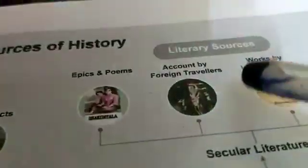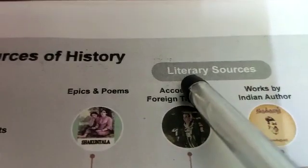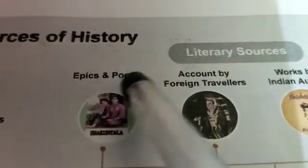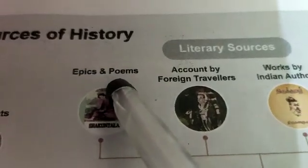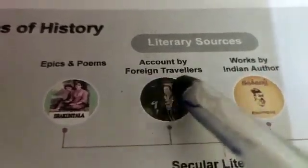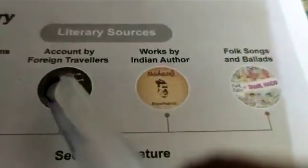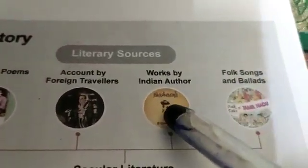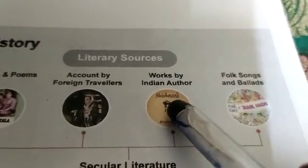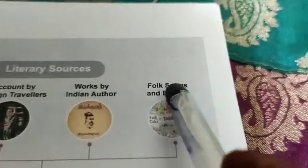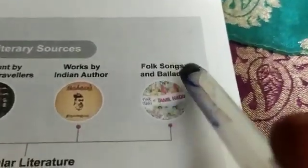Next is the second source of history — literary sources. Literary sources include: first, epics and poems; second, accounts by foreign travelers; third, works by Indian authors; and fourth, folk songs and ballads. These are all written in books.